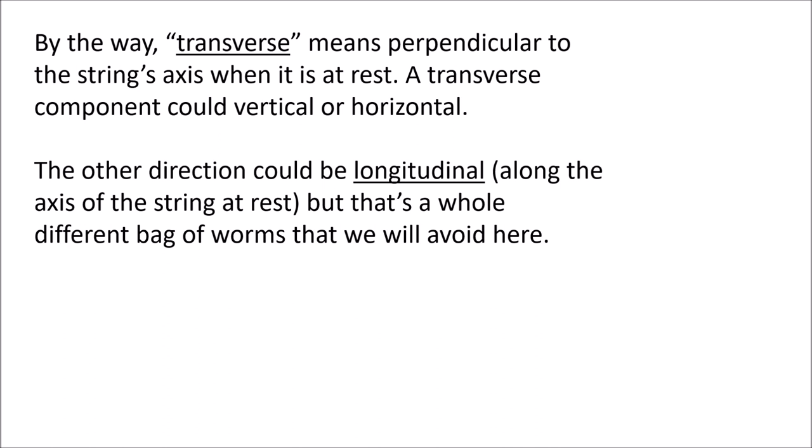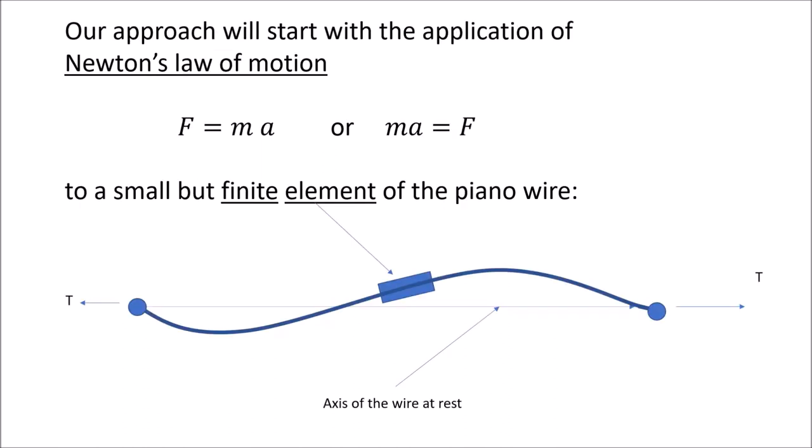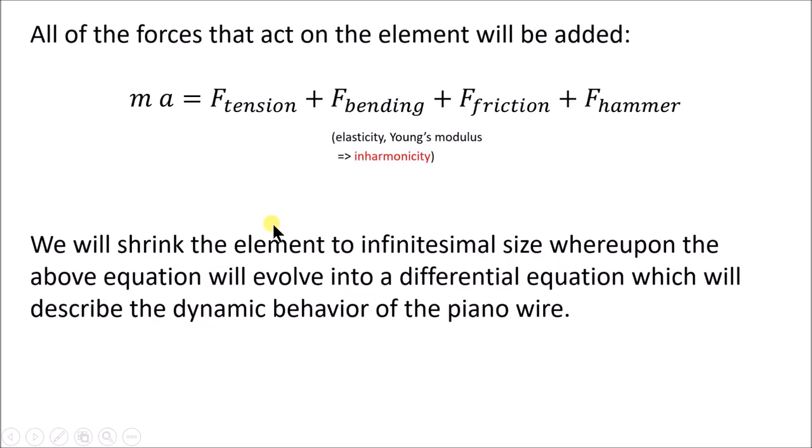A few comments about transverse waves. We're going to apply Newton's law of motion, F equals ma or ma equals F, to a small but finite element of the piano wire, which is right here. Here's the graph, here's the bridge, this blue line is the axis of the wire at rest, and we're going to apply F equals ma to this element. The element can occur any place along this wire.